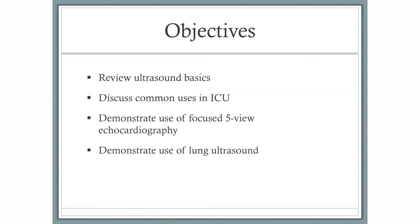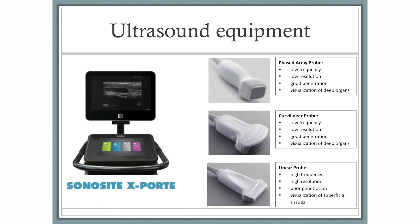Today we will provide a brief review of ultrasound basics, identify the indications of thoracic ultrasound in the ICU, and demonstrate the procedure for chest ultrasonography. For our demonstration today, we will be using the Sonocyte Export Ultrasound Machine. The ultrasound transducer we will use for our thoracic imaging today is the phased array probe, also commonly referred to as the cardiac probe.